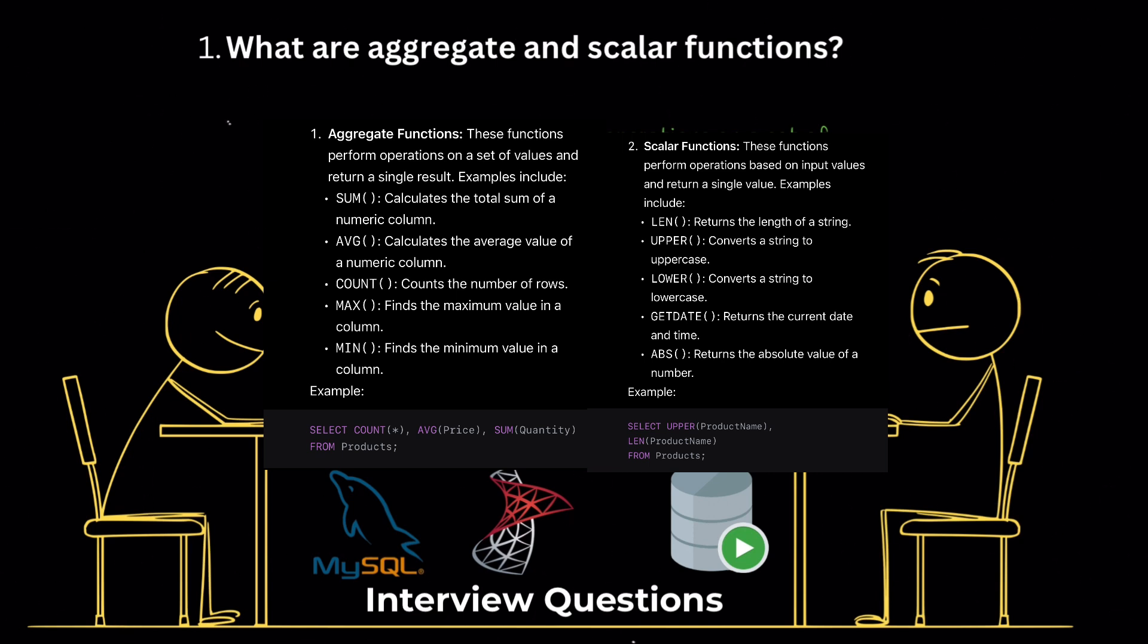Scalar functions. These functions perform operations based on input values and return a single value. Examples include len, returns the length of a string. Upper, converts a string to uppercase. Lower, converts a string to lowercase. GetDate, returns the current date and time. Abs, returns the absolute value of a number.